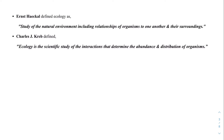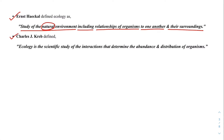Now let's move forward to definitions given by Ernst Haeckel and Charles J. Krepp. Ernst Haeckel defined ecology as the study of natural environment — please note the word natural — including relationships of organisms to one another and their surroundings. Charles J. Krepp defined ecology as the scientific study of the interactions that determine the abundance and distribution of organisms.